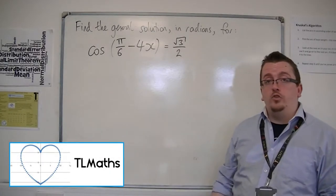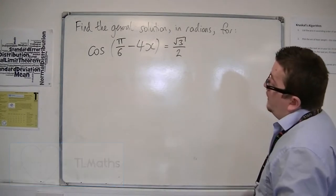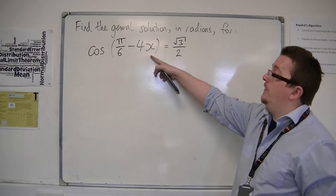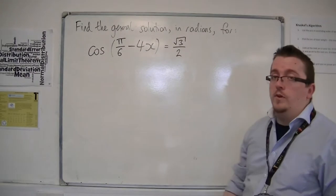So we're going to look through another tricky example here. Find the general solution in radians for cos of pi over 6 take away 4x is equal to root 3 over 2.